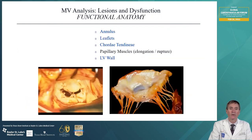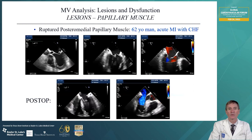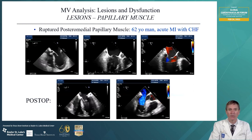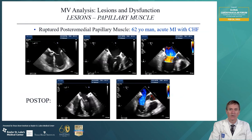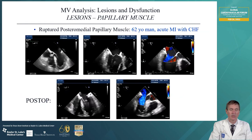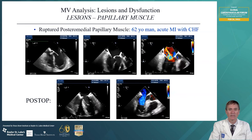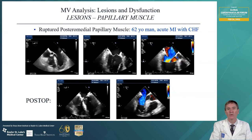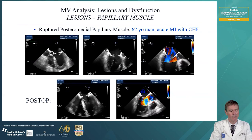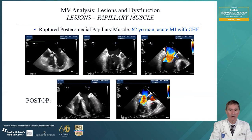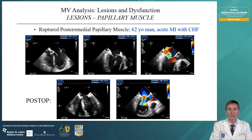Next, the papillary muscles. We can have a ruptured posterior middle papillary muscle from an acute myocardial infarction. You can see that papillary muscle moving around with a severe jet of acute regurgitation making the patient quite sick. An intra-aortic balloon pump was placed. We were able to reconstruct that papillary muscle, putting it back on the left ventricular wall with a good result.